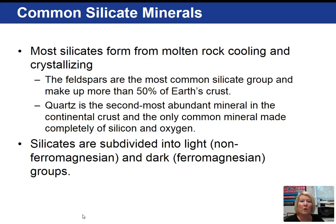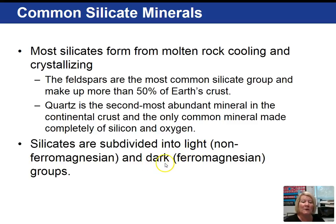Most silicate minerals form as magma cools, so they're igneous in nature. The feldspars are the most common silicate group, making up more than 50% of the Earth's crust, followed by quartz, the second most abundant mineral in the continental crust. We can subdivide silicates into light and dark groups — light are called non-ferromagnesium and dark are called ferromagnesium groups. Ferro is iron, magnesium is magnesium. The light silicates do not possess iron and magnesium and as a result they are light, while what makes dark silicates dark is the presence of iron and/or magnesium.